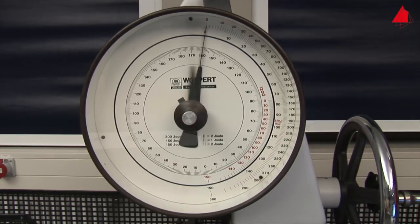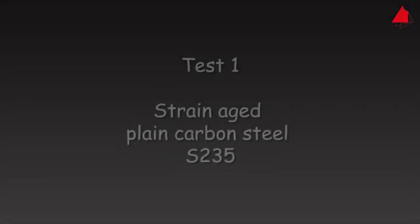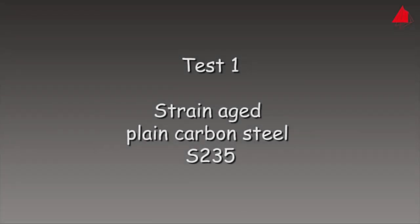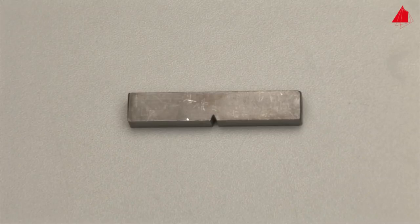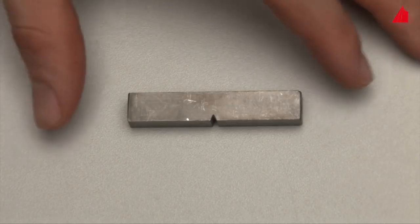The machine is ready for the tests. First test: strain aged plain carbon steel S-235. This is our test specimen. It has been machined to standardized size and shape with the characteristic v-shaped notch.